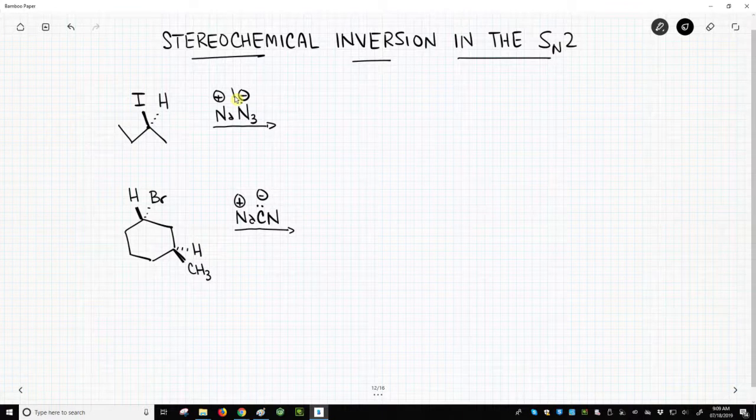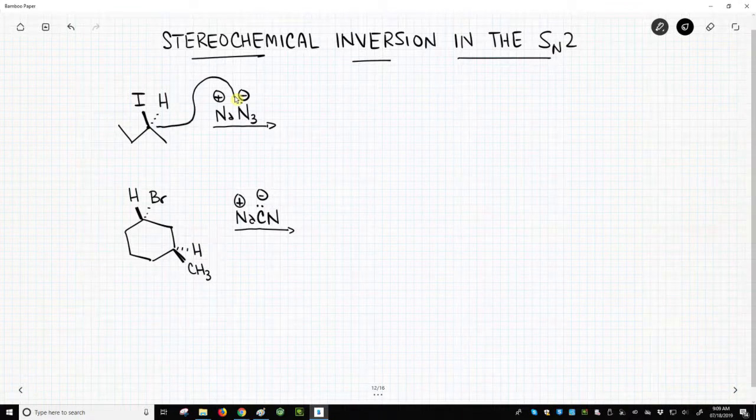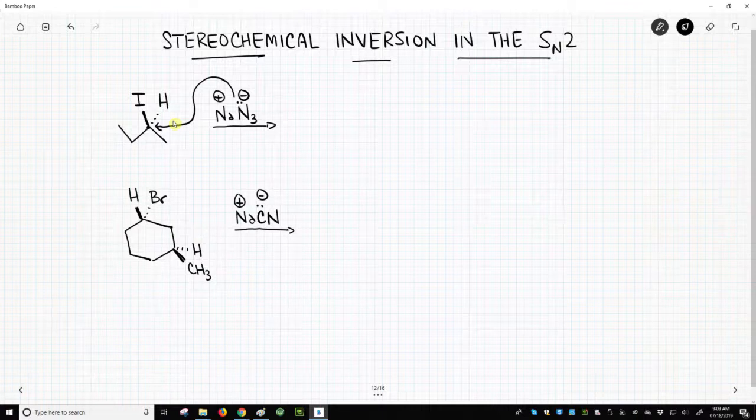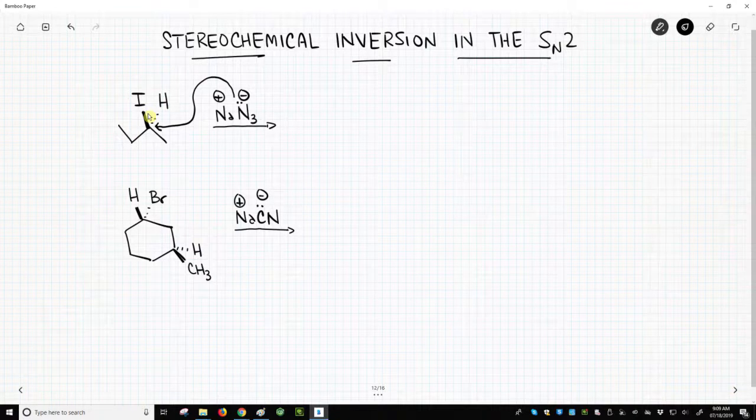So our nucleophile attacks at that carbon, and when it attacks, it actually attacks from the back side of this carbon iodine bond.